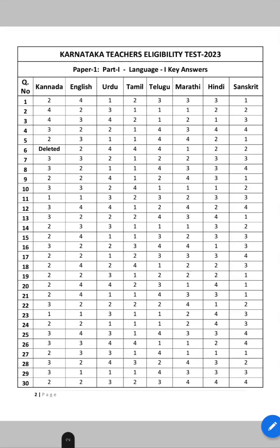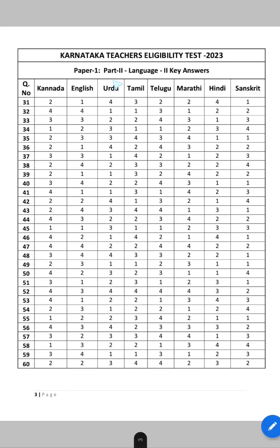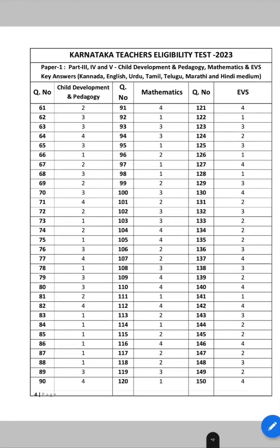I have downloaded the key answers of KTET Paper 1. On page one you can find the key answers for Paper 1 Part 1 — Languages: Kannada, English, Urdu, Tamil, Telugu, Marathi, Hindi, Sanskrit. On page three you can find answers for Part 2 language two. On page four you can find key answers for Part 3, Part 4, and Part 5 — that is Child Development and Pedagogy, Mathematics, and EVS. Questions 61 to 90 cover Child Development and Pedagogy, and questions 91 to 120 and 121 to 150 cover Mathematics and EVS respectively.